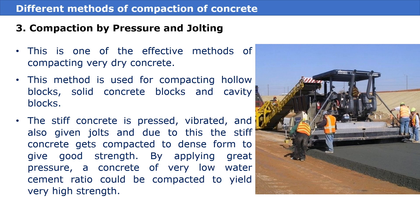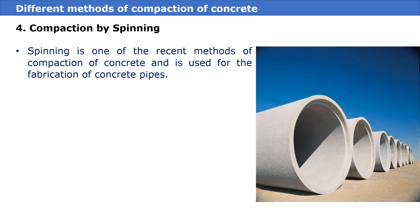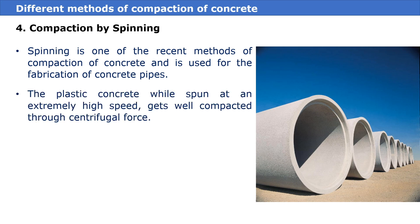The fourth type of compaction is compaction by spinning. Spinning is one of the recent methods of compaction of concrete and is used for the fabrication of concrete pipes. The plastic concrete, while spun at extremely high speed, gets well compacted through centrifugal force.